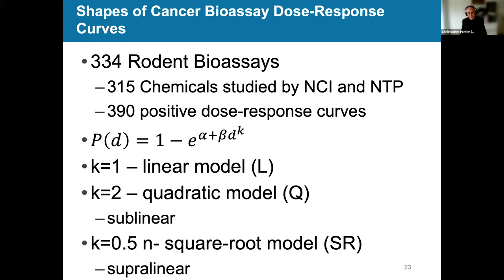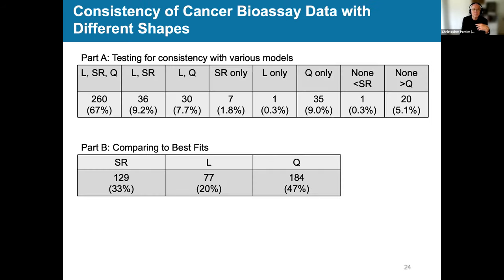Let's look at some empirical data. So, we took 350, give or take, rodent cancer bioassays that were looked at by the National Cancer Institute and the National Toxicology Program. And from that, we generated 390 dose response curves for those chemicals that actually caused the cancers. We fit a model that was very flexible to it, and that model can be linear, quadratic, which is sublinear, or square root, which is superlinear. And we look to see how often we get these patterns.